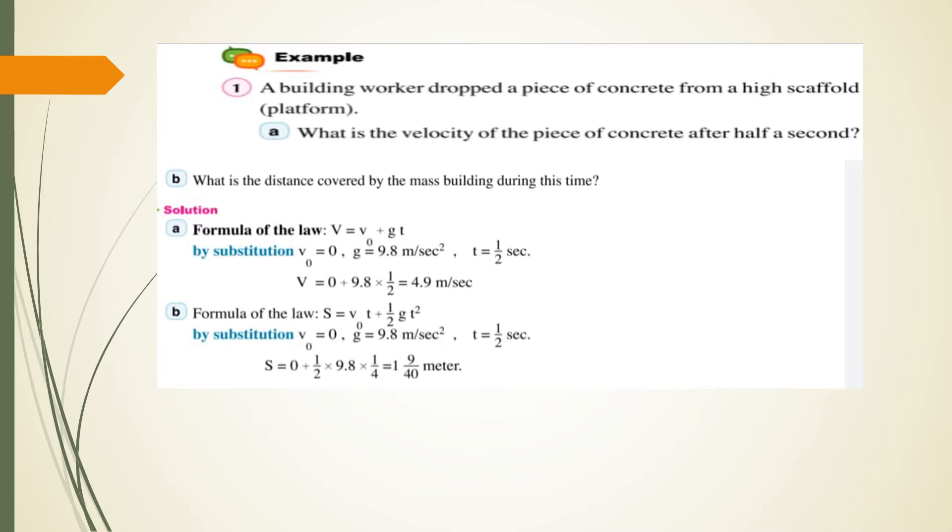B: The distance S equals V₀t plus half gt squared. V₀ equals 0 and g equals 9.8 meters per second squared and t equals half seconds. Then S equals 0 plus half times 9.8 times one quarter equals 9 over 40 meters.